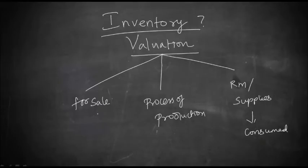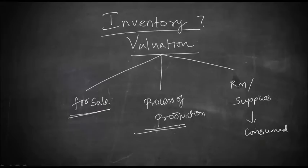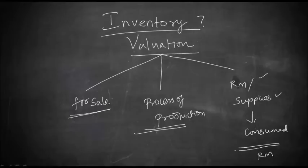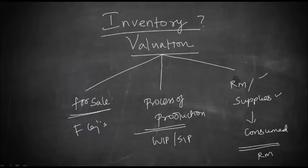So, what you understand is inventory is basically some assets which you are keeping with you for sale, or it is something which is in the process of production, or it may be in the form of raw material or supplies which have to be consumed in the production process or in rendering services. In conclusion, this is raw material stock, this is work in progress stock, and this is finished goods. So, inventories are basically raw material, work in process, and finished goods.